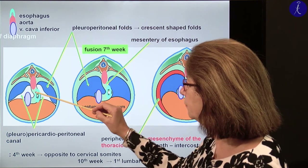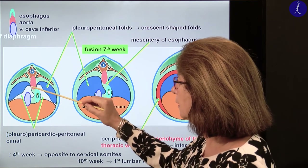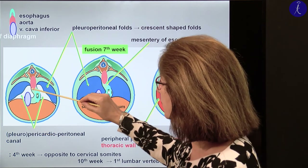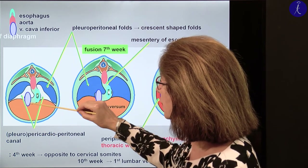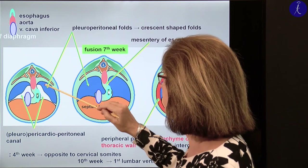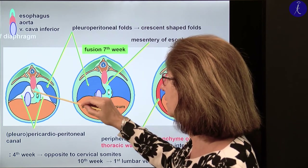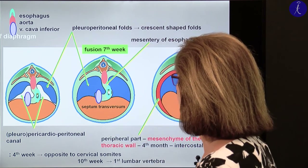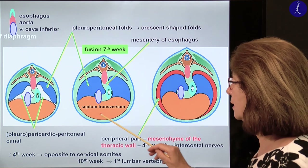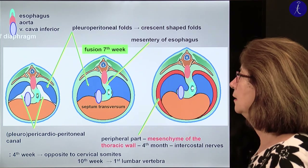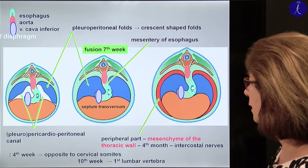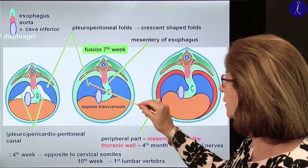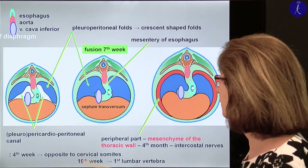We have here the esophagus, which is embedded in the dorsal mesenterium, and we have dorsally the aorta and close to here the inferior vena cava. The body cavities are now separated — already at the end of the seventh week. At this time point the diaphragm consists of the mesentery of the esophagus, the pleuroperitonal folds, and the septum transversum.